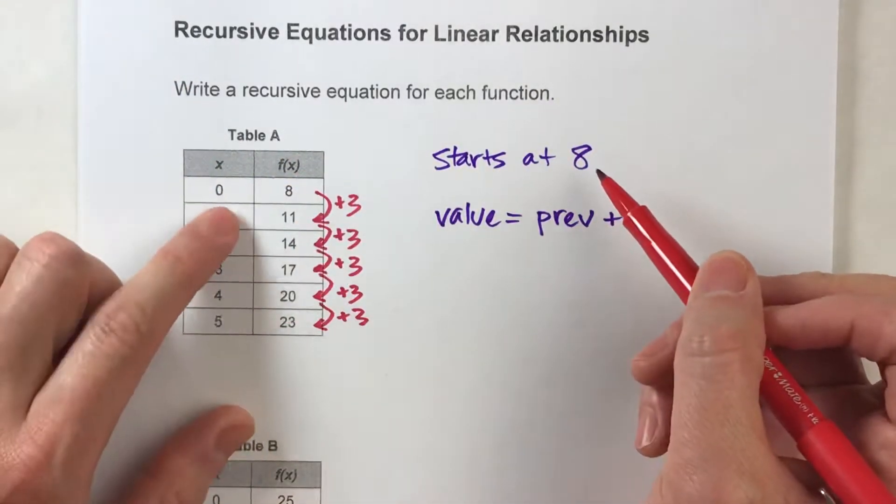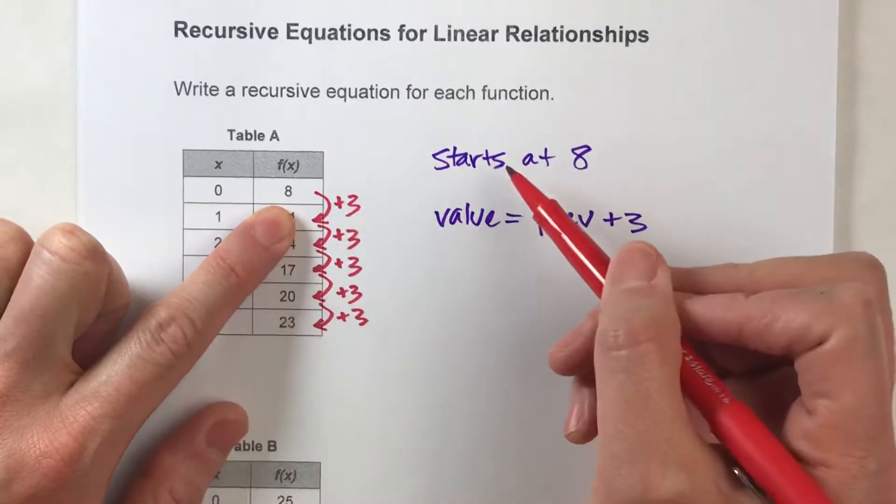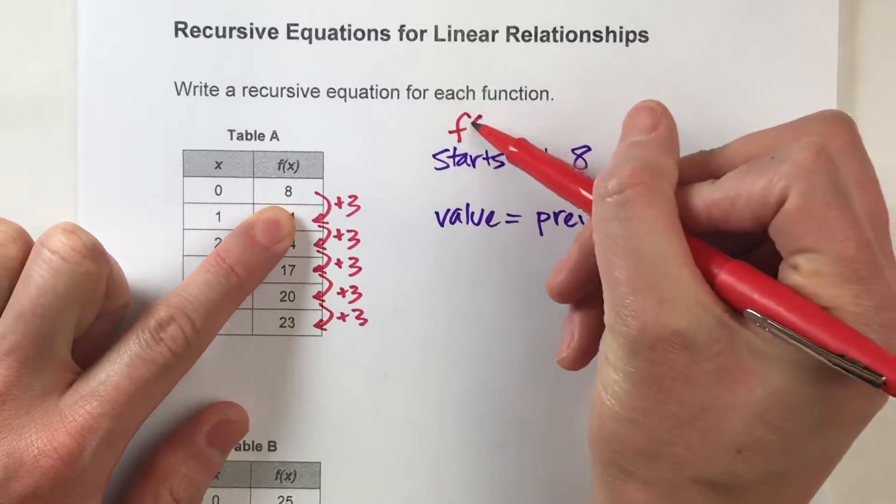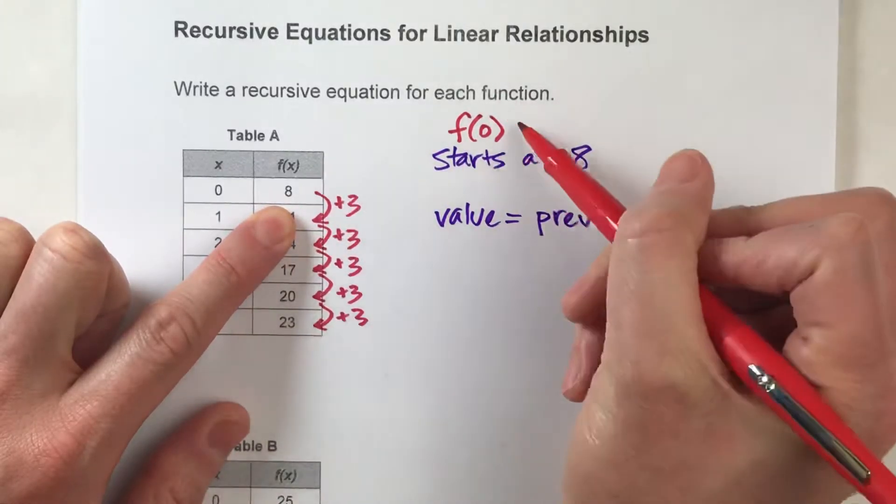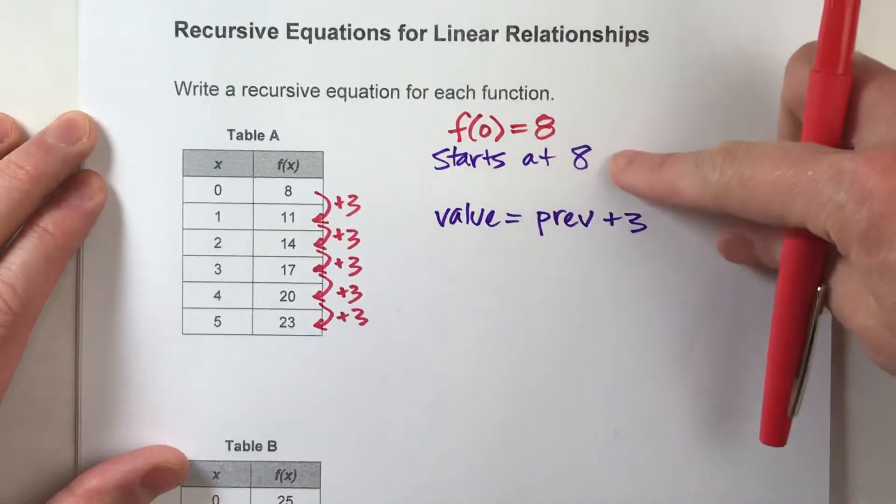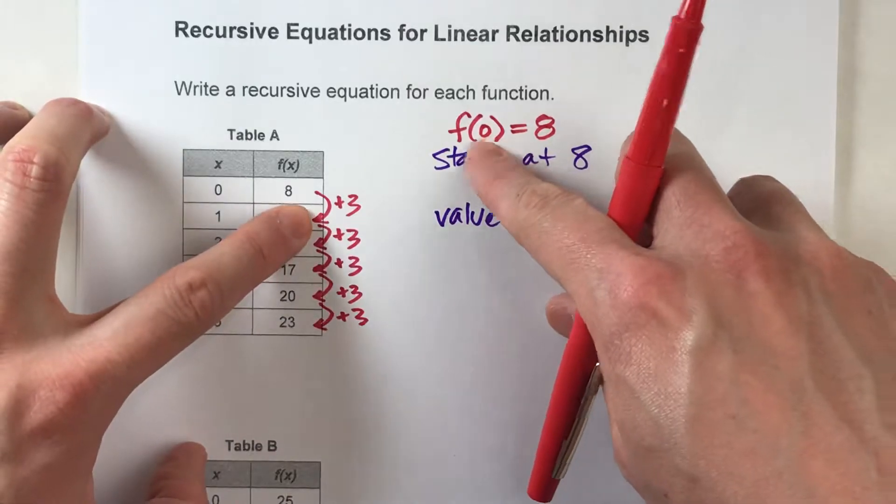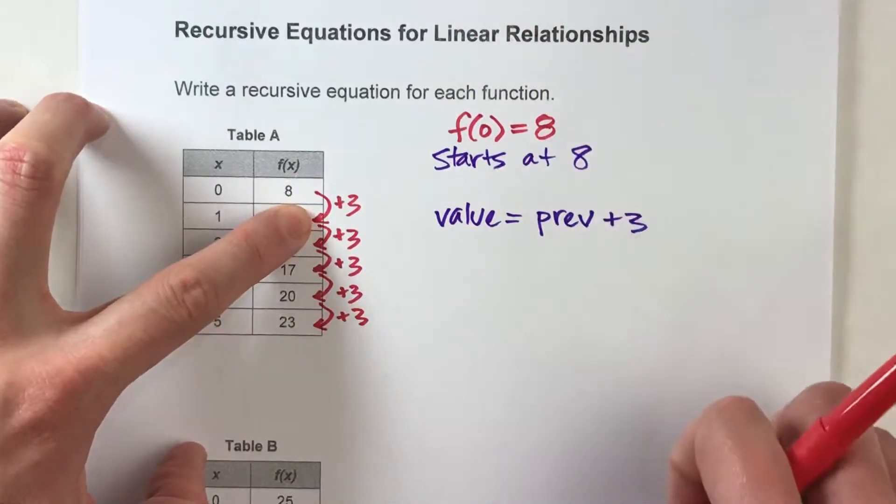The fact that it starts at 8 means when x is 0, f of x is 8. So to state that, we would say f of 0 is 8. And that's all that this means. It means that our table starts at 0, and that value of the function at 0 is 8.